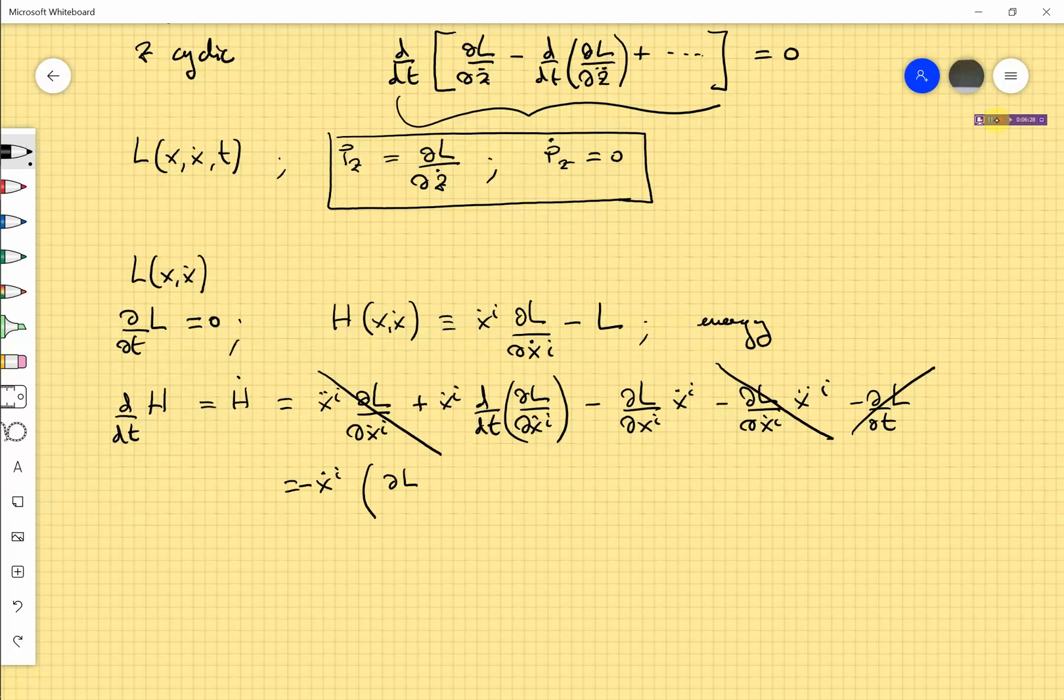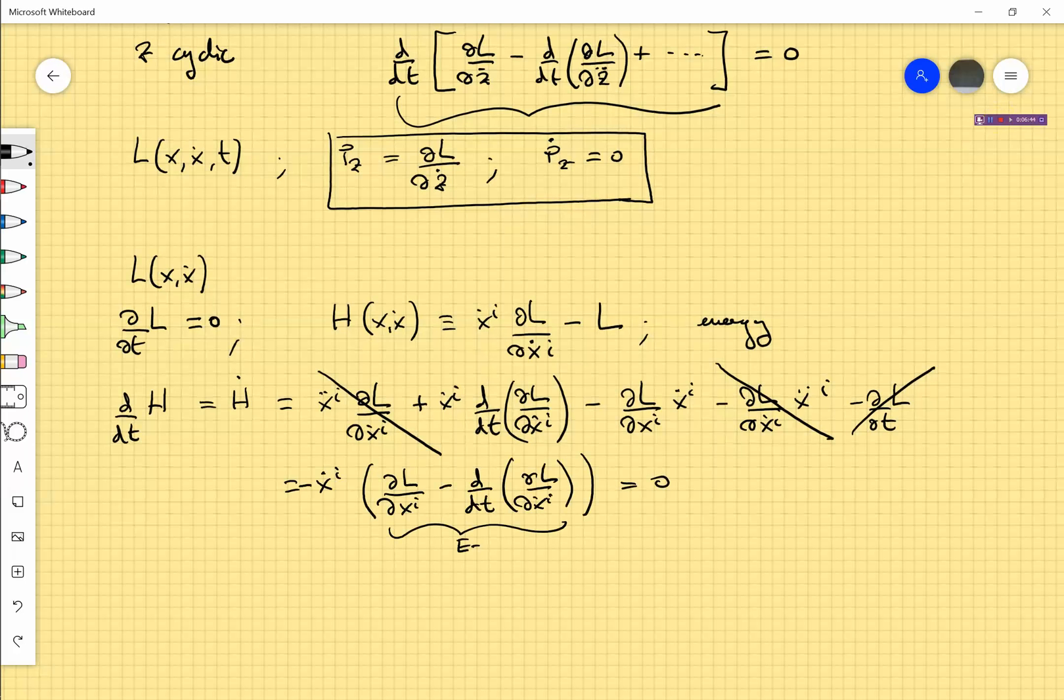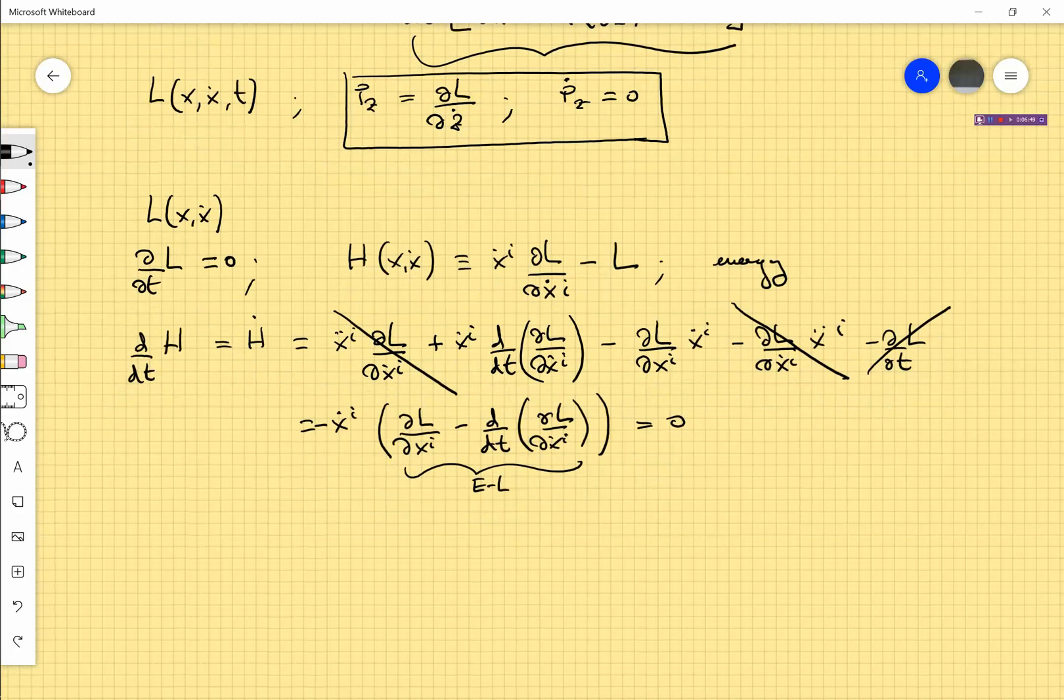If you want to put a minus, we find x dot i times partial L with respect to x i minus the time derivative of partial L partial x dot i, which is zero because this is the Euler-Lagrange operator.